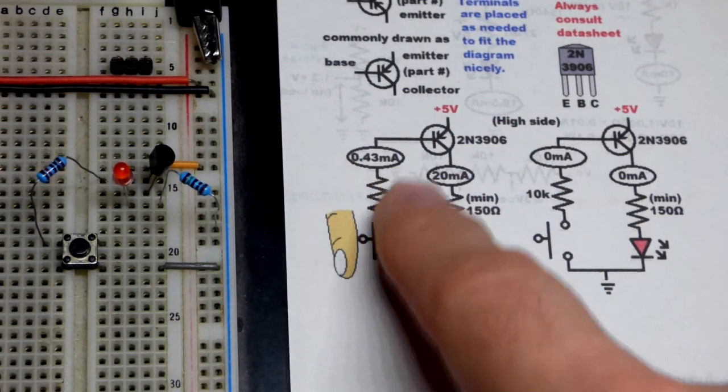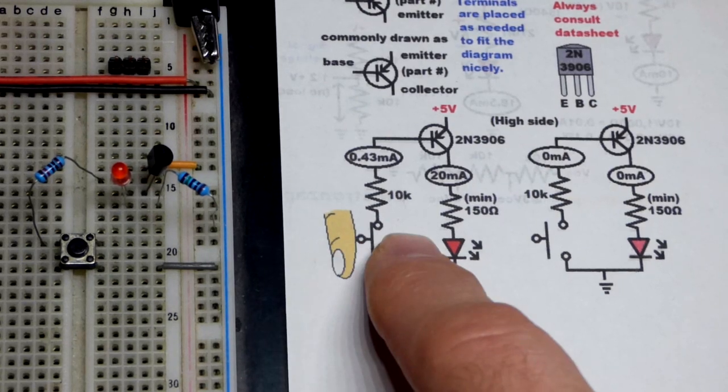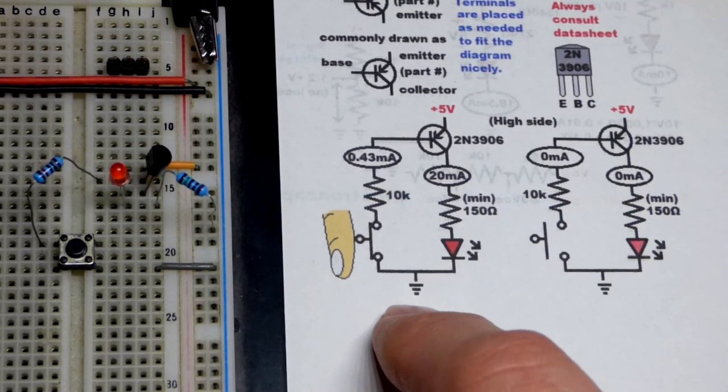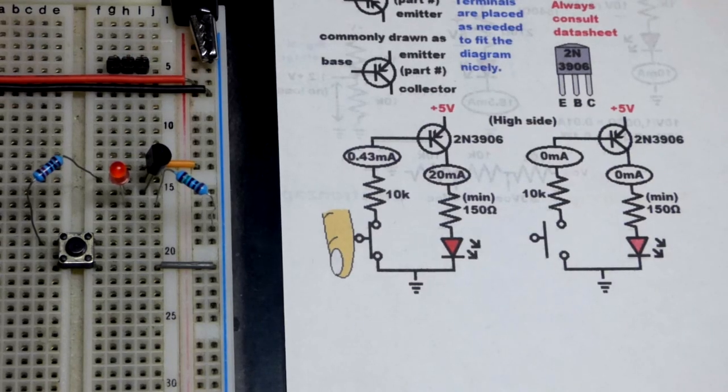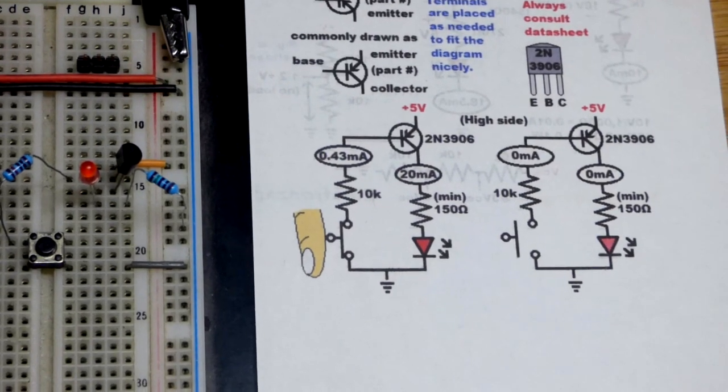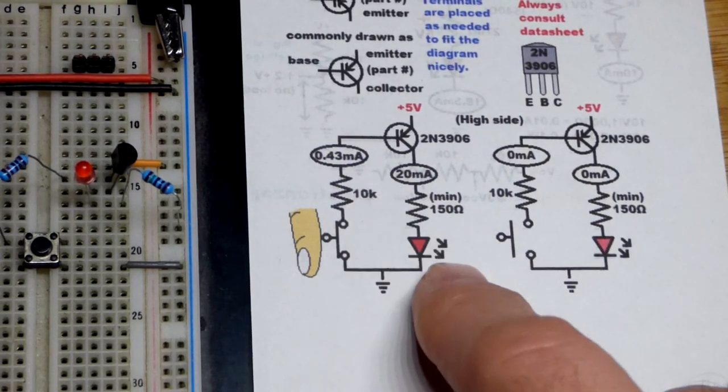We got somewhere around about 0.43 milliamps of current when we close the switch because we got a 10k resistor right there. If we only have a hundred gain with this transistor—it's probably closer to 200—but in case with a hundred gain...